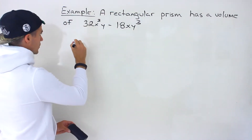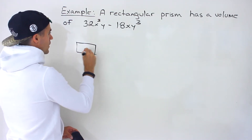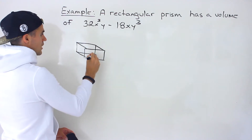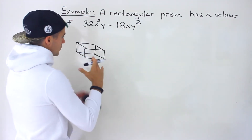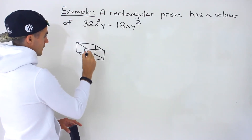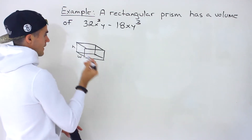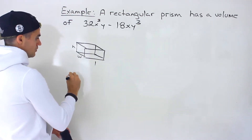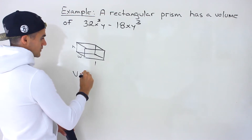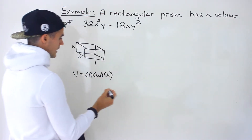Let's do a quick general review when we're working with a rectangular prism, a 3D object. The characteristics for a rectangular prism are the length, the width, and the height. The volume of a rectangular prism is equal to length times width times height.